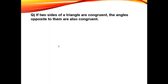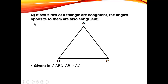As you can see on the screen, this statement is: if two sides of a triangle are congruent, the angles opposite to them are also congruent. If we consider a triangle — let's say triangle ABC — where AB and AC are congruent, what we have to prove is that the opposite angles are also congruent.